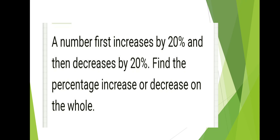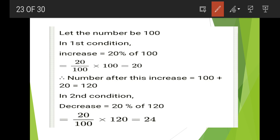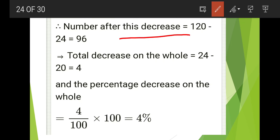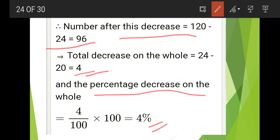Next: a number first increases by 20 percent and then decreases by 20 percent. Find the percentage increase or decrease on the whole. Let the number be 100. Increase: 20 percent of 100 equals 20, so number becomes 120. Decrease: 20 percent of 120 equals 24, so number becomes 96. Total decrease on the whole is 100 minus 96 equals 4. Percentage decrease is 4 by 100 into 100 equals 4 percent.